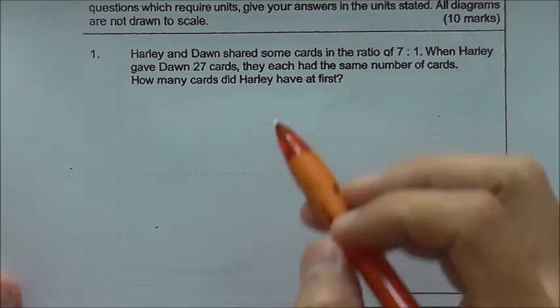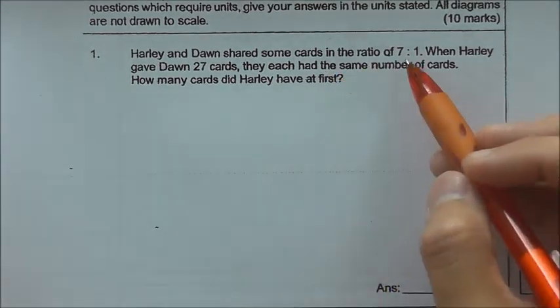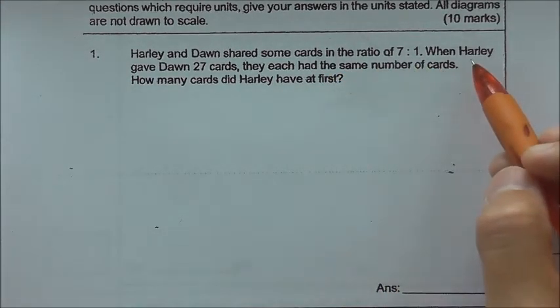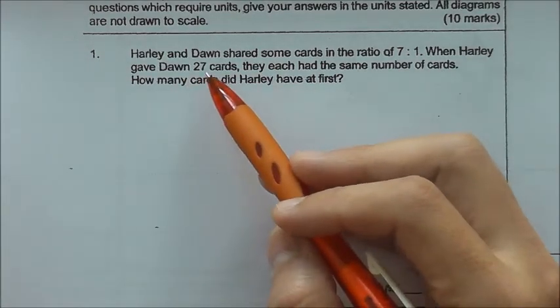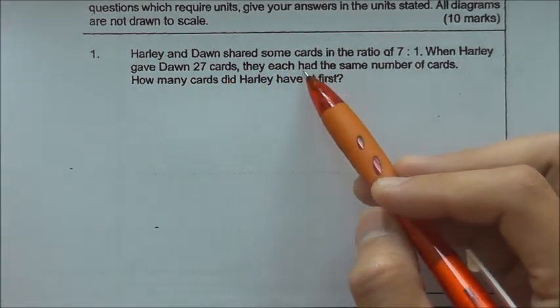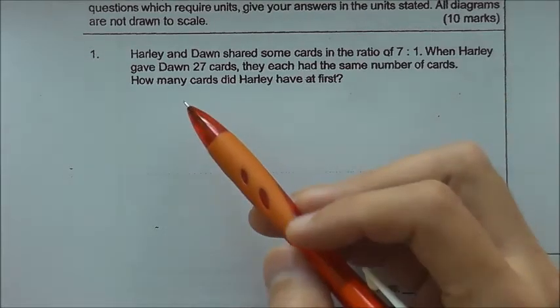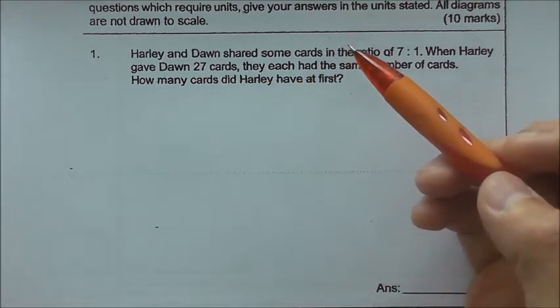Question 1: Harley and Dawn shared some cards in the ratio of 7 is to 1. When Harley gave Dawn 27 cards, they each had the same number of cards. How many cards did Harley have at first?